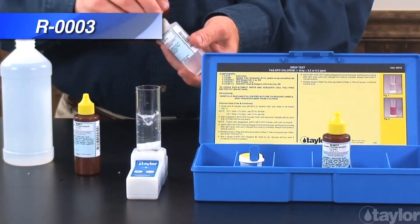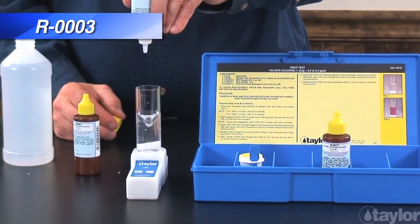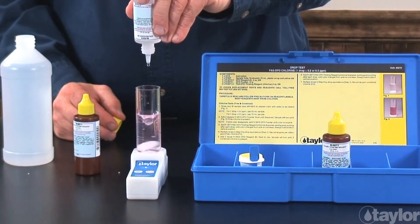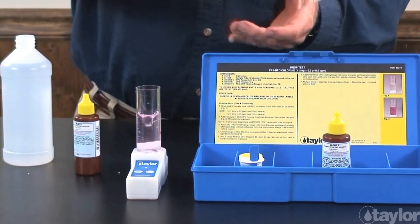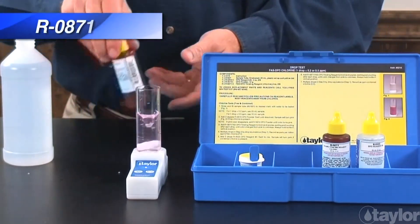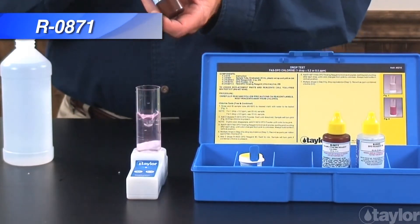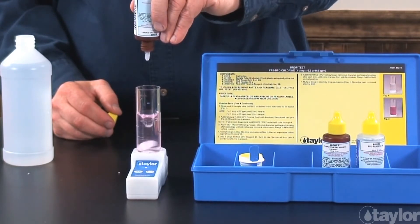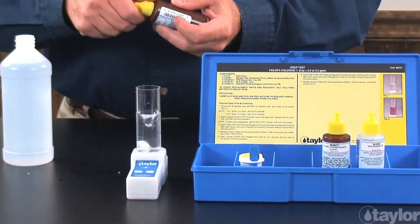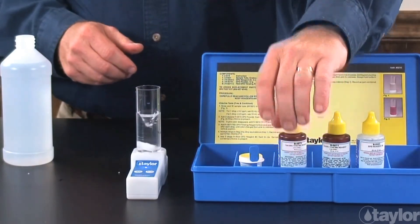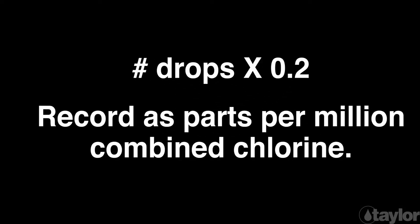Add 5 drops of reagent number 3 and swirl to mix. If combined chlorine is present, the sample will turn pink. Add FAS DPD titrating reagent for chlorine drop-wise, swirling and counting after each drop until the sample goes from pink to colorless. Multiply the drops expended in the previous step by the drop equivalents — 0.2 parts per million in this case — and record as parts per million combined chlorine.